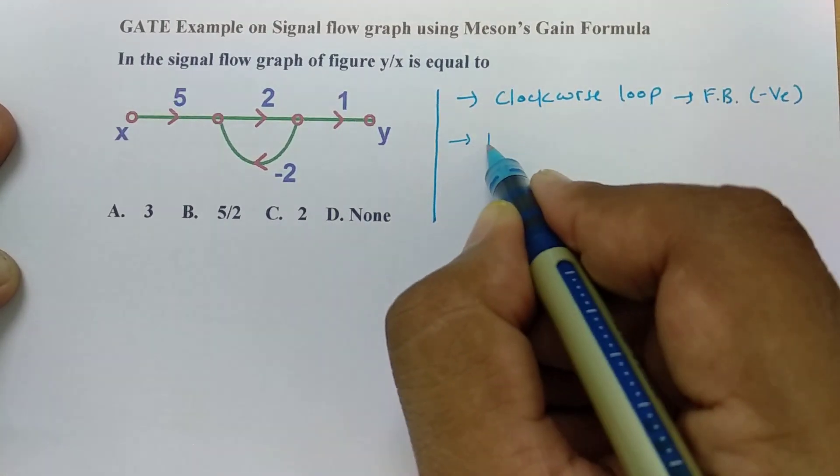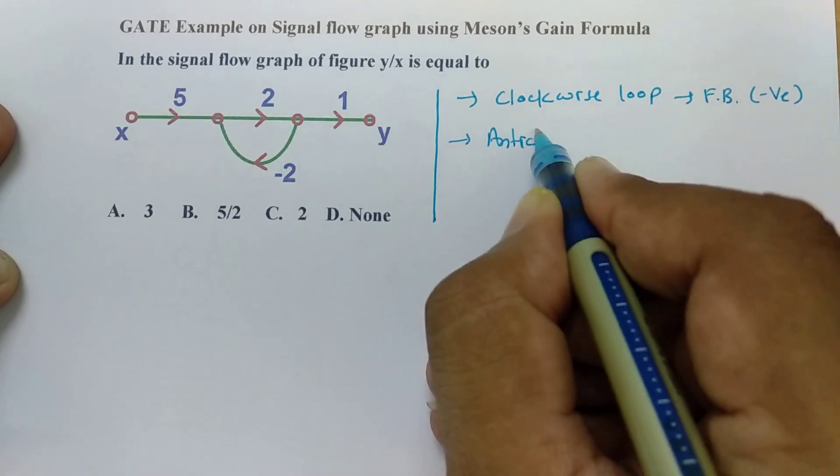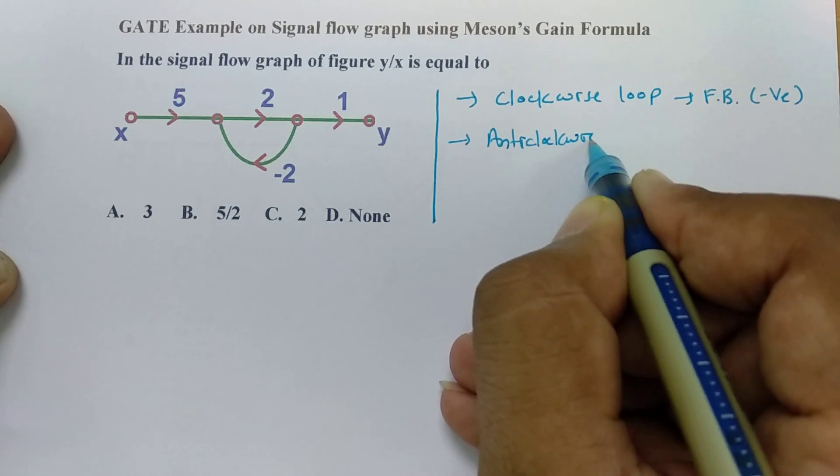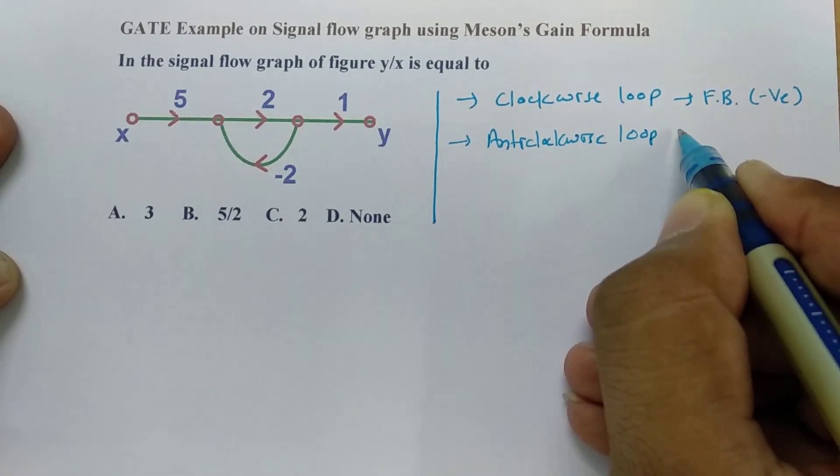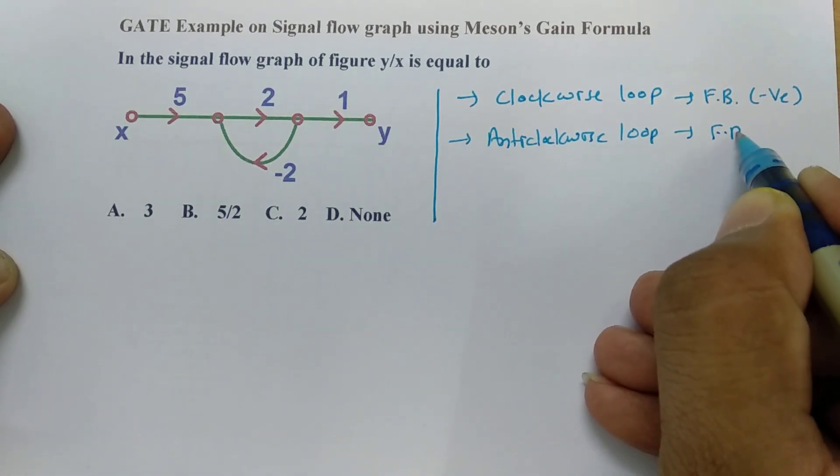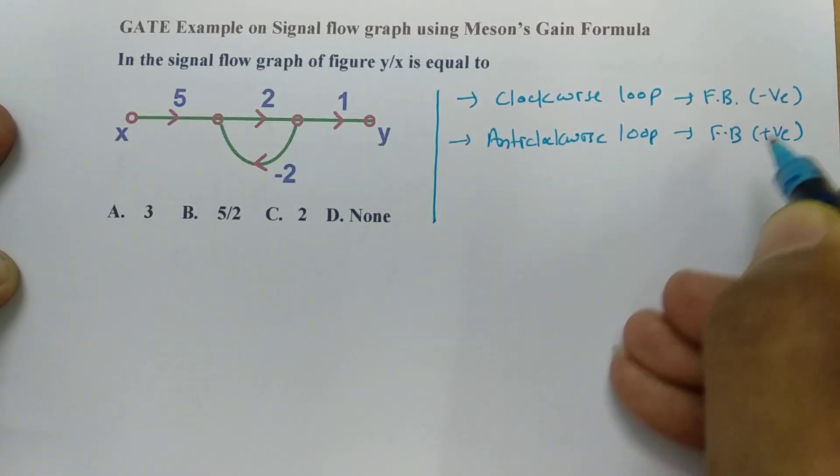And if you have loop in anticlockwise direction, then one can say feedback is positive.